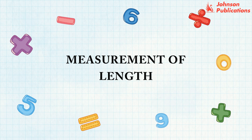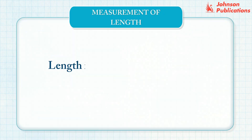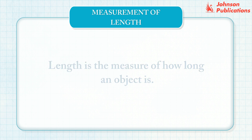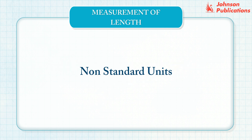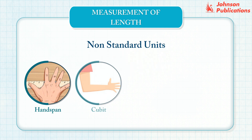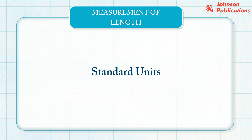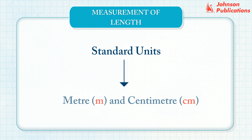Measurement of length. Length is the measure of how long an object is. We have already learned about non-standard units of measurement such as hand span, cubit, foot span, and pace. But these units do not give us the exact measurement. For exact measurement, we need a system of standard measuring units.